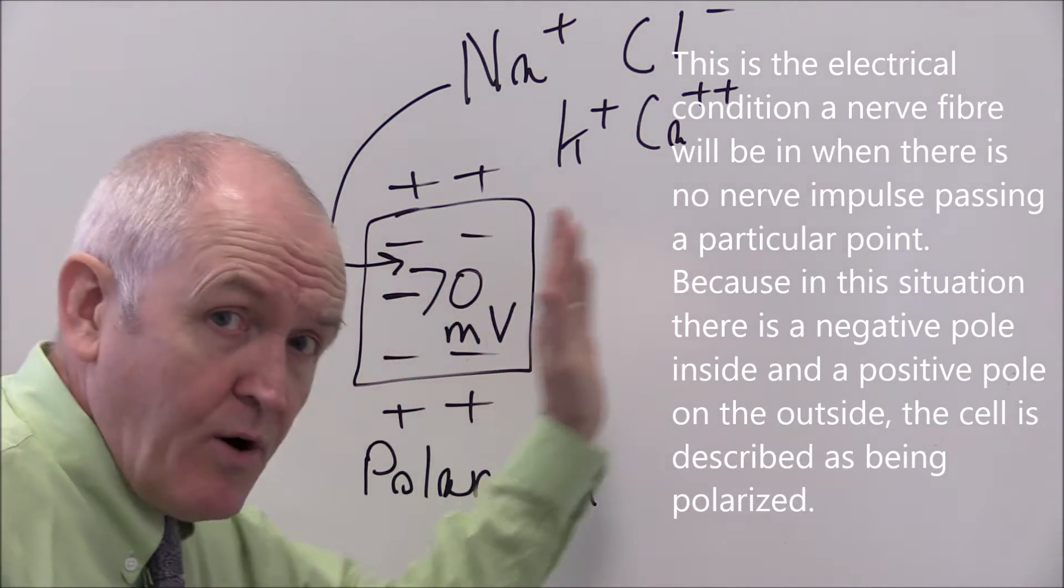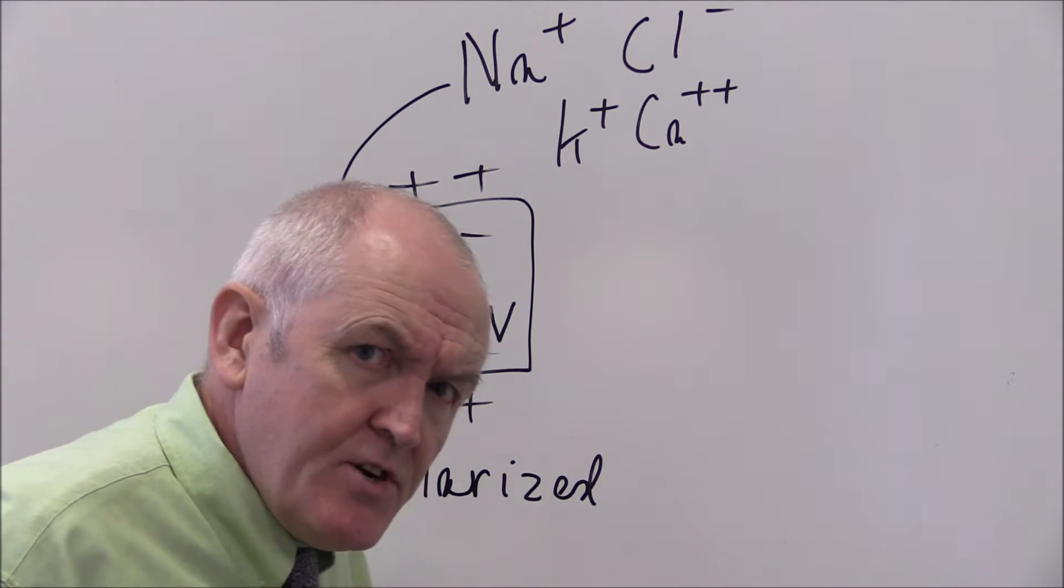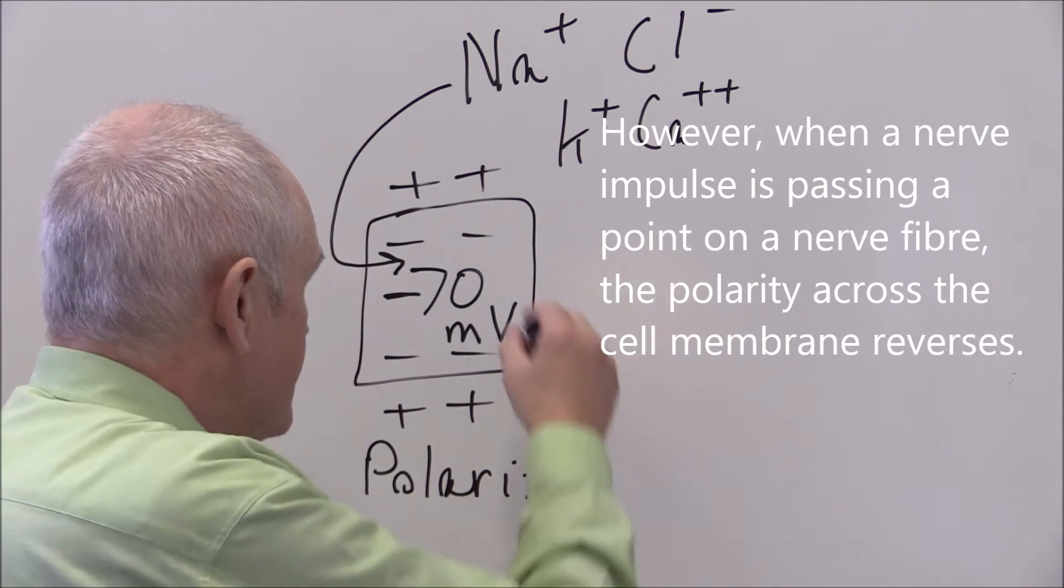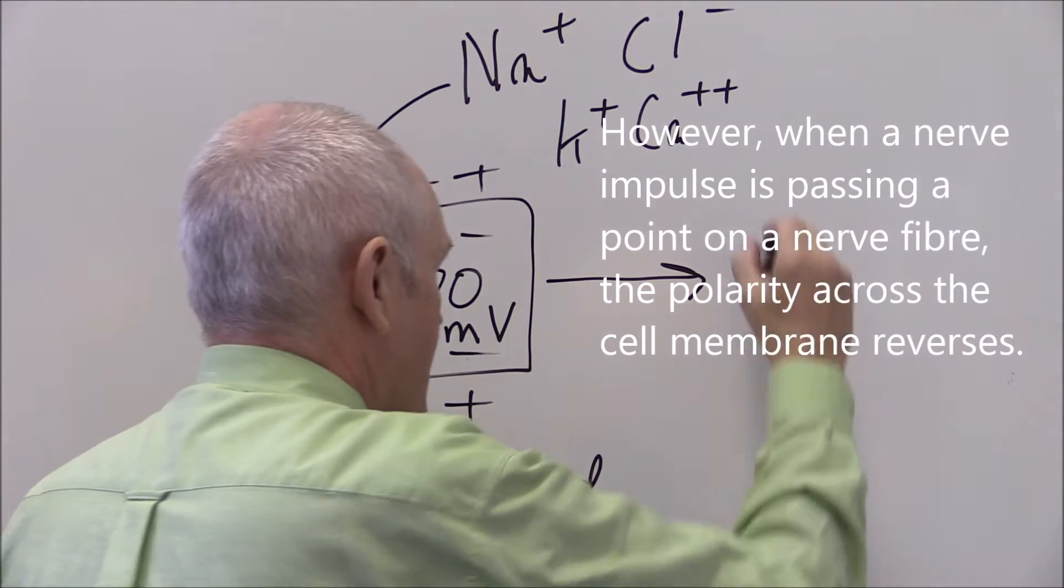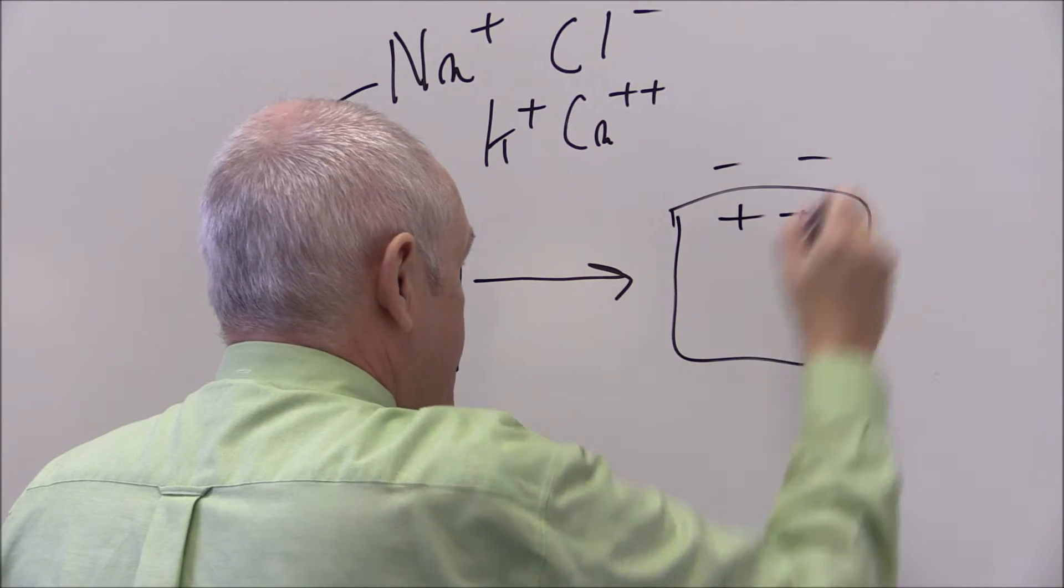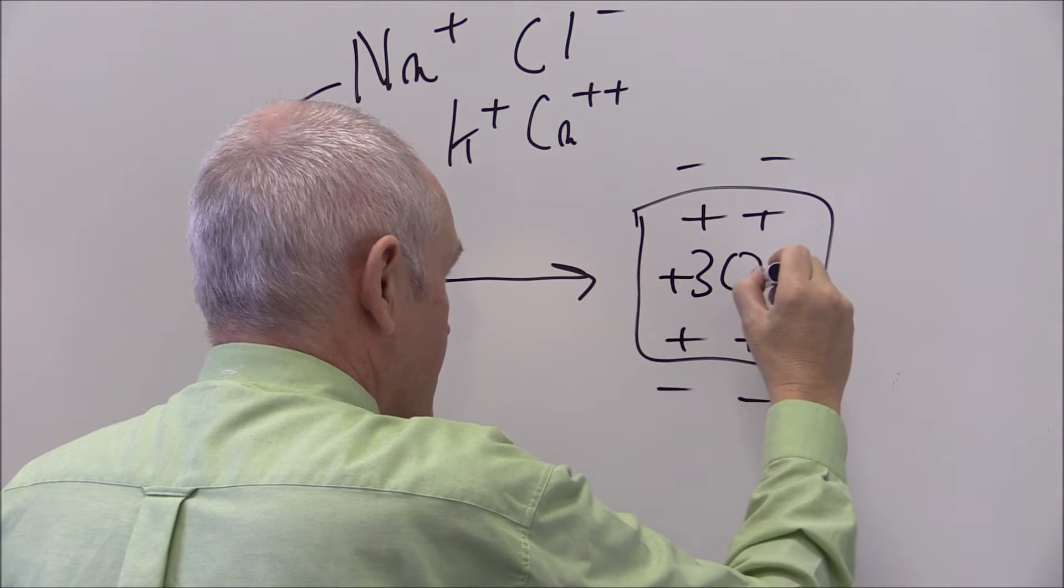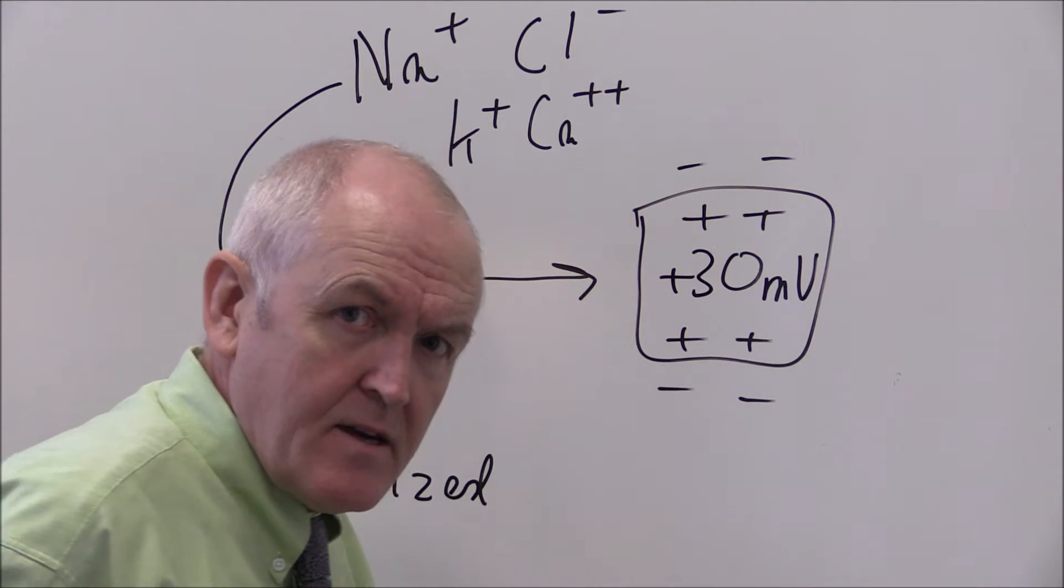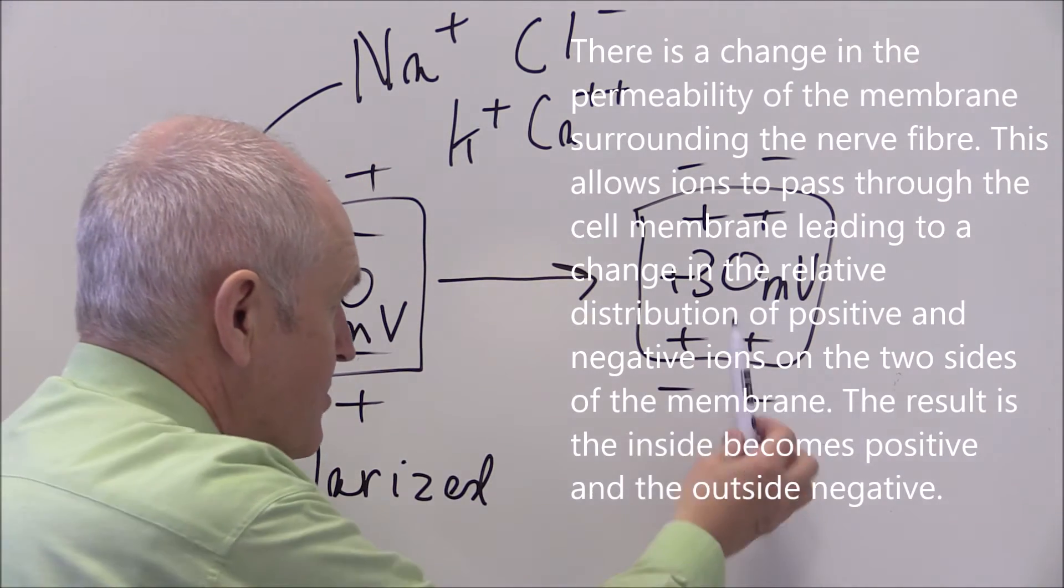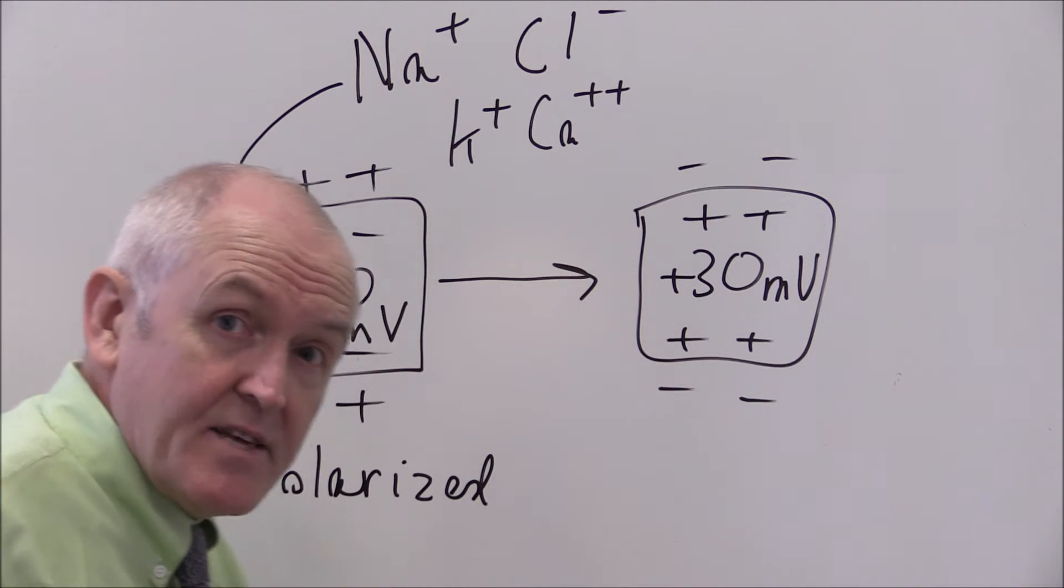So when the cell is at rest it's polarized about minus 70 millivolts inside. But then if there's a nerve impulse or if a nerve impulse is coming along, this section of the cell will change from being polarized and it will become positive inside and negative outside to the tune of about plus 30 millivolts. So it changes from being negative 70 millivolts inside to plus 30 millivolts inside. And I think you can see there the difference is exactly a tenth of a volt.